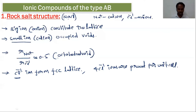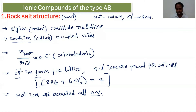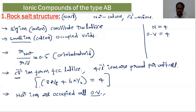Cl⁻ ions are present at each corner and each face center. Na⁺ ions are present in the octahedral voids. The number of octahedral voids equals the number of lattice points n, which is four. So there are four octahedral voids, located at each edge center and the center of the body.